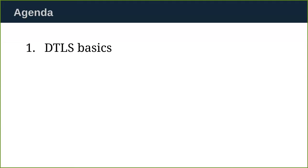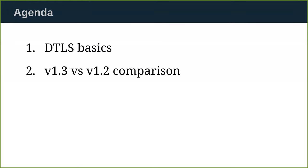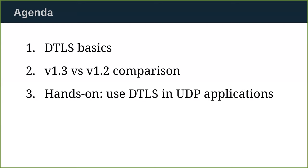Let's see the agenda for today. We will first introduce some basics for DTLS — why it's needed and its trade-offs. Then we'll go over a comparison of this latest version, DTLS 1.3, versus 1.2. After that, we switch to code, and we'll see how to use the WolfSSL DTLS implementation to secure a very basic UDP client and server application. After that, we'll have a Q&A session.